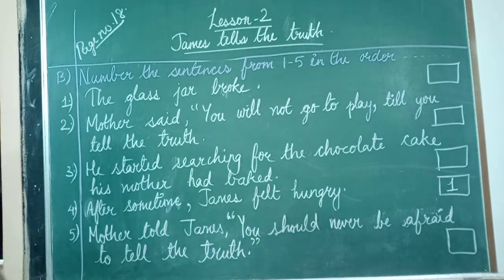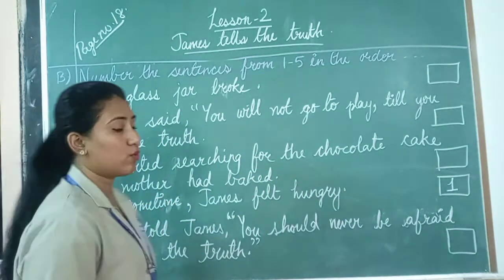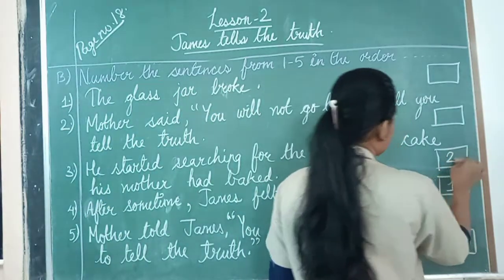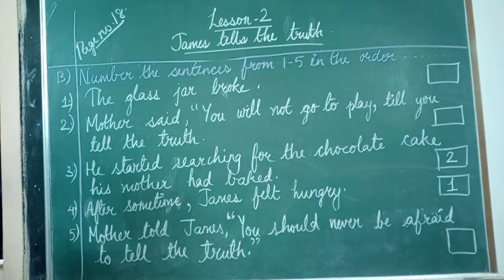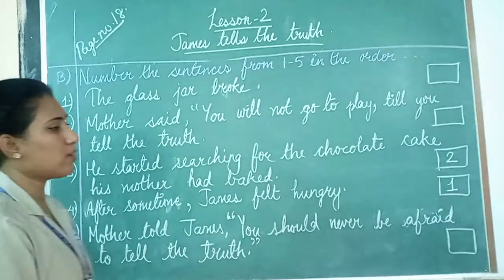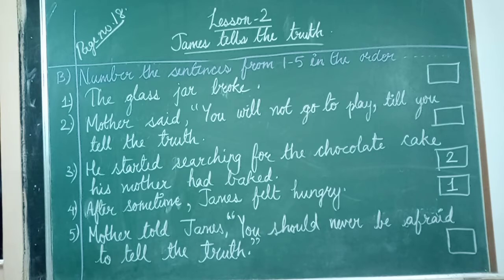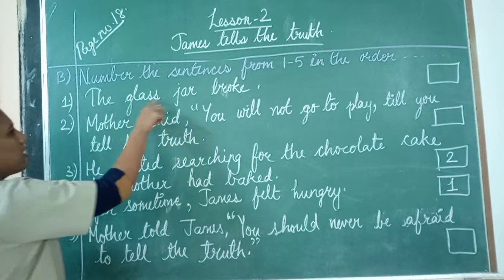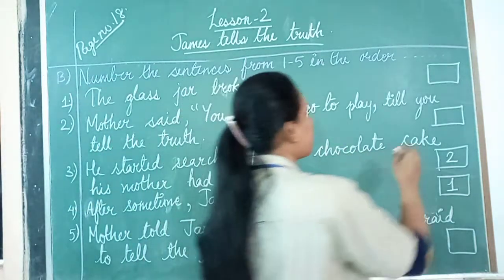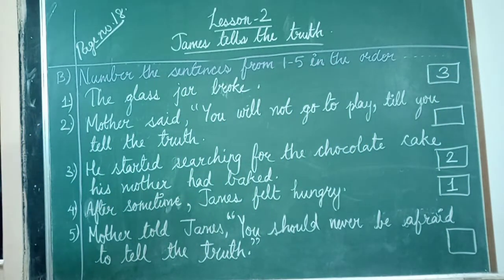The next event: he was hungry, so what did he start doing? He started searching for the chocolate cake his mother had kept. So write 2 in the third box — the line 'He started searching for the chocolate cake his mother had kept.' Then the glass jar broke — so write 3 in the first box.